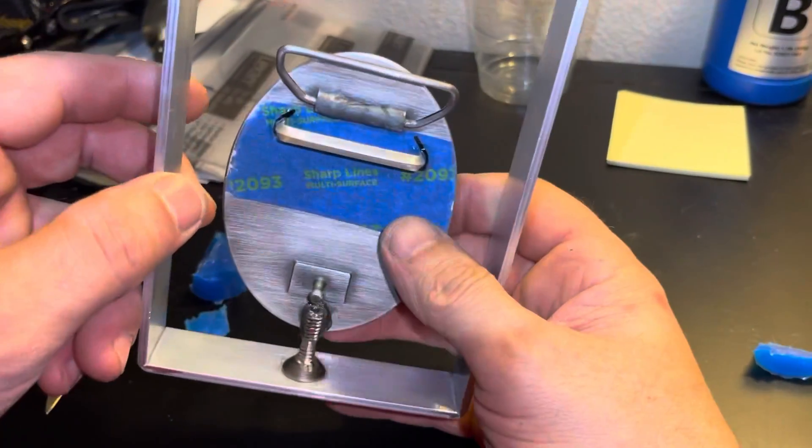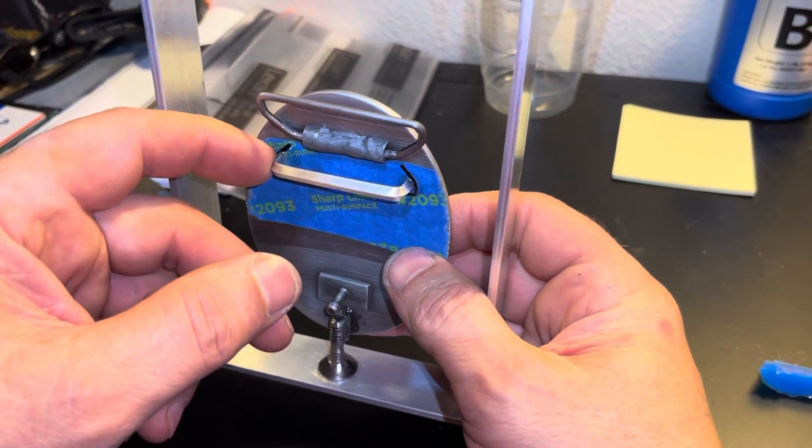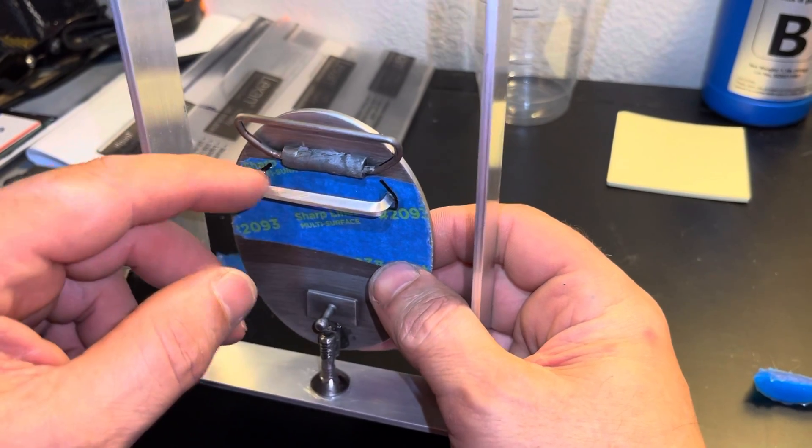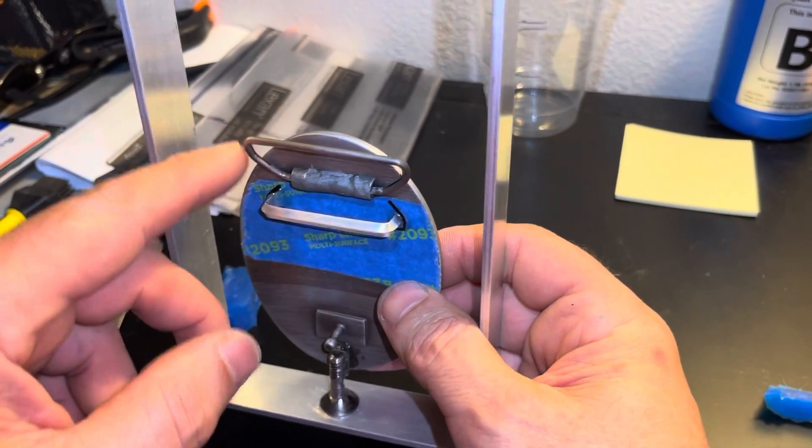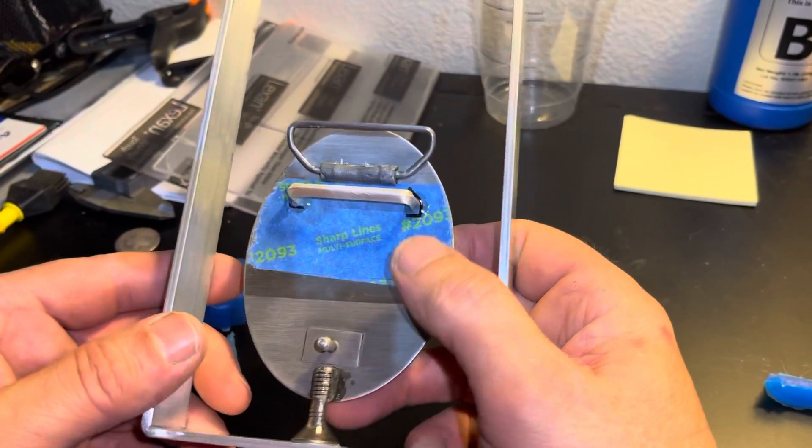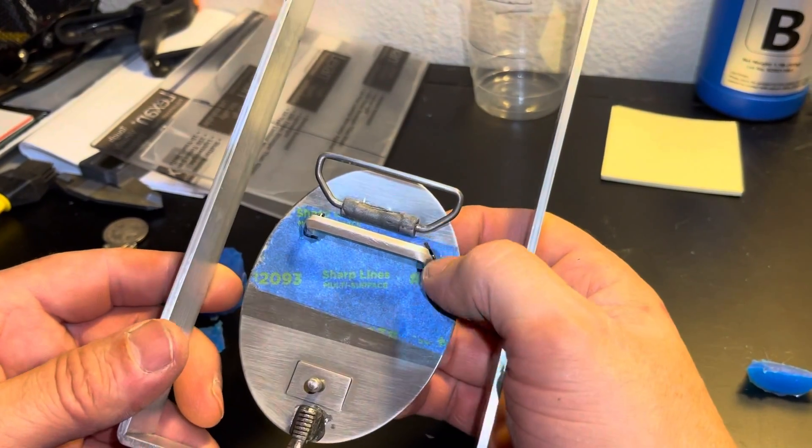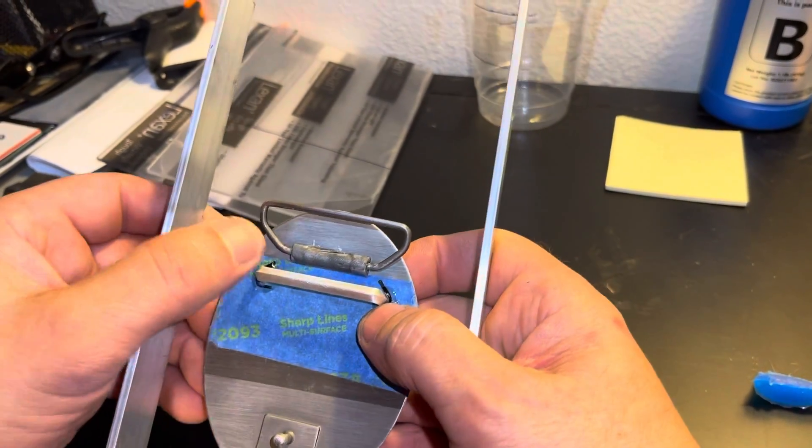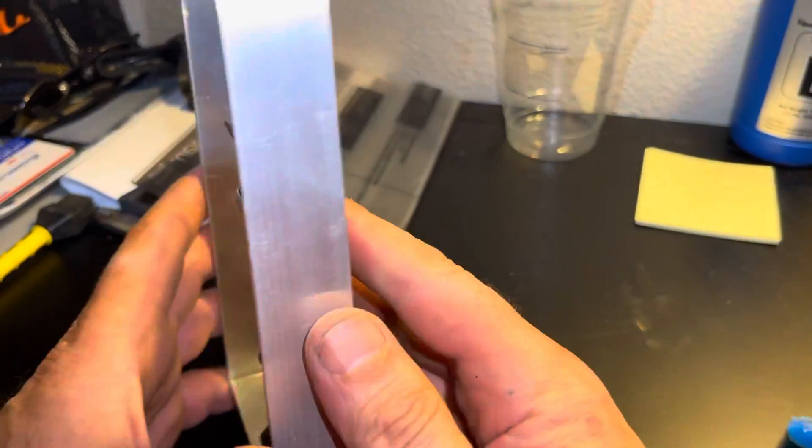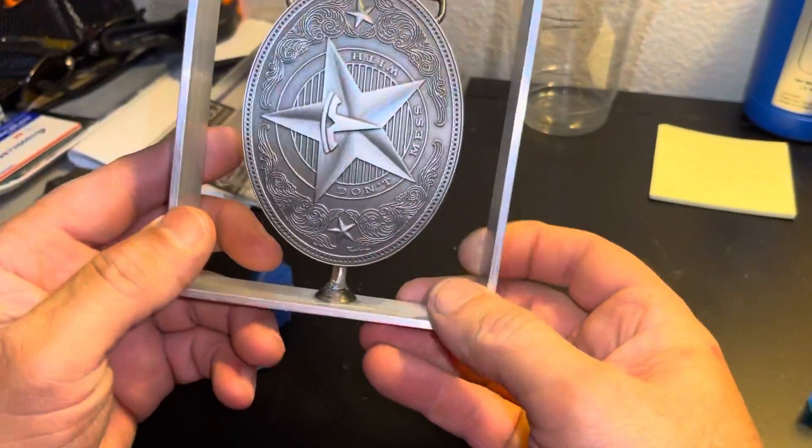But yeah, I've just done two different choices of buckle for the belt. Whatever I don't use I'll just chop off of here in the injection wax.